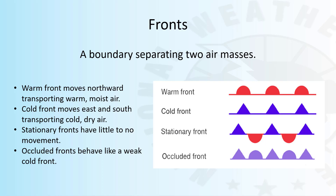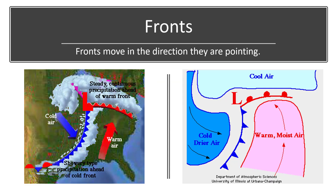A stationary front usually occurs when a cold front stalls. Stationary fronts have little to no movement. Occluded fronts are common in the northern U.S. and they behave like a weak cold front. Fronts move in the direction they are pointing.